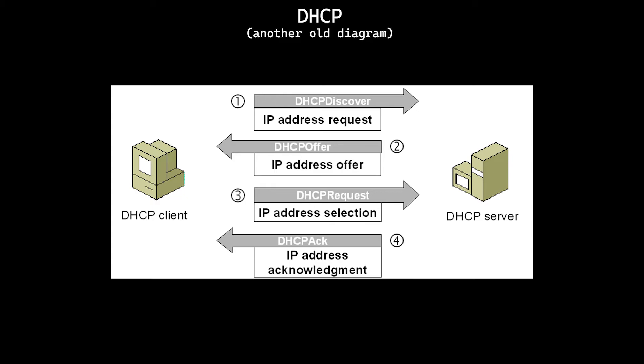If you ever see that a device has a 169.whatever.whatever.whatever address, that means the client was either not able to find the DHCP server, or was not able to obtain a lease — usually because the server is out of IP addresses in the lease range, or because the device is blocked.